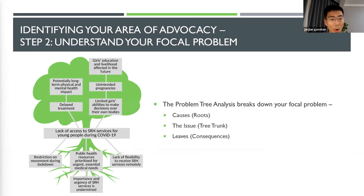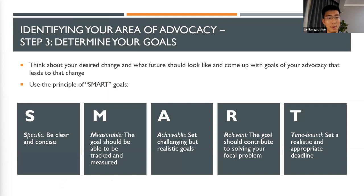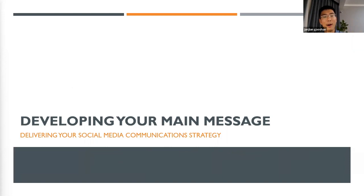Looking at the leaves of the tree, lack of access to SRHR services may cause delayed treatment, limited access to make decisions over their own bodies, unintended pregnancy, and more. This tool helps you understand the cause and impact of the social issue you are focusing on. Once you have a focused issue, you need a smart goal: S for specific, M for measurable, A for achievable, R for relevance, and T for time-bound.